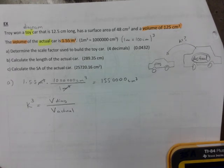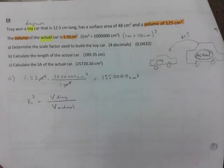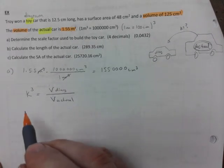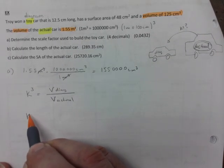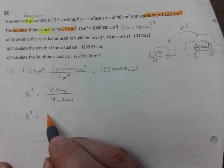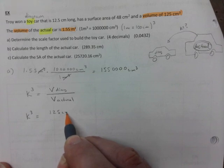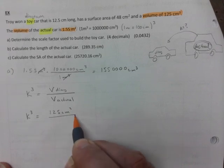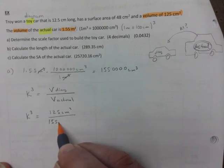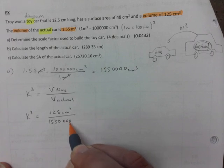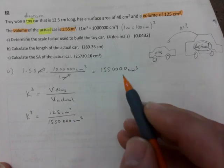This formula is the one we will be using because we're comparing cubic units. So k³ equals volume of the diagram, 125 cm³, over 1,550,000 cm³.